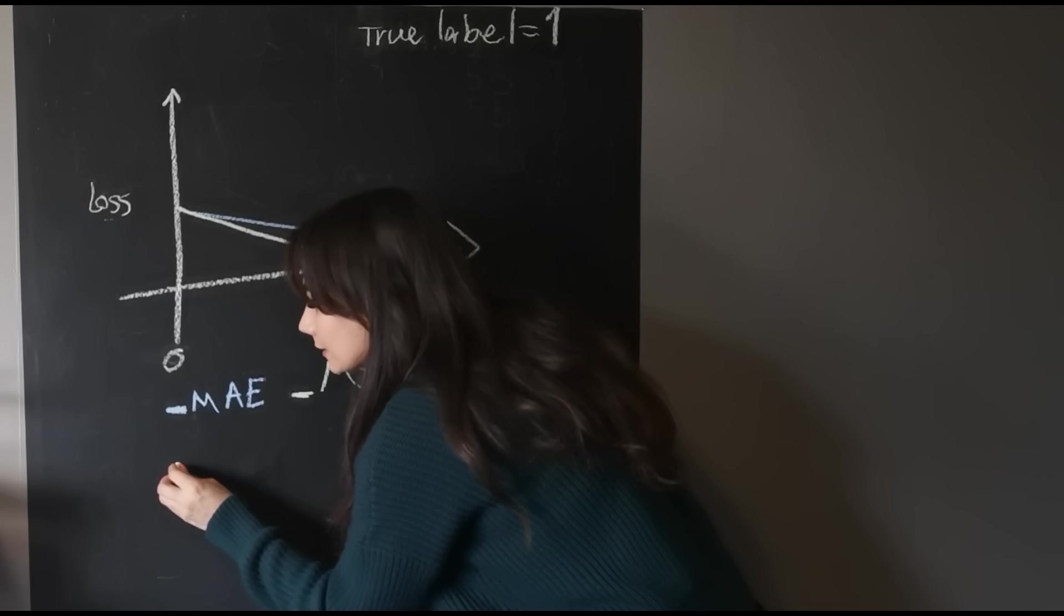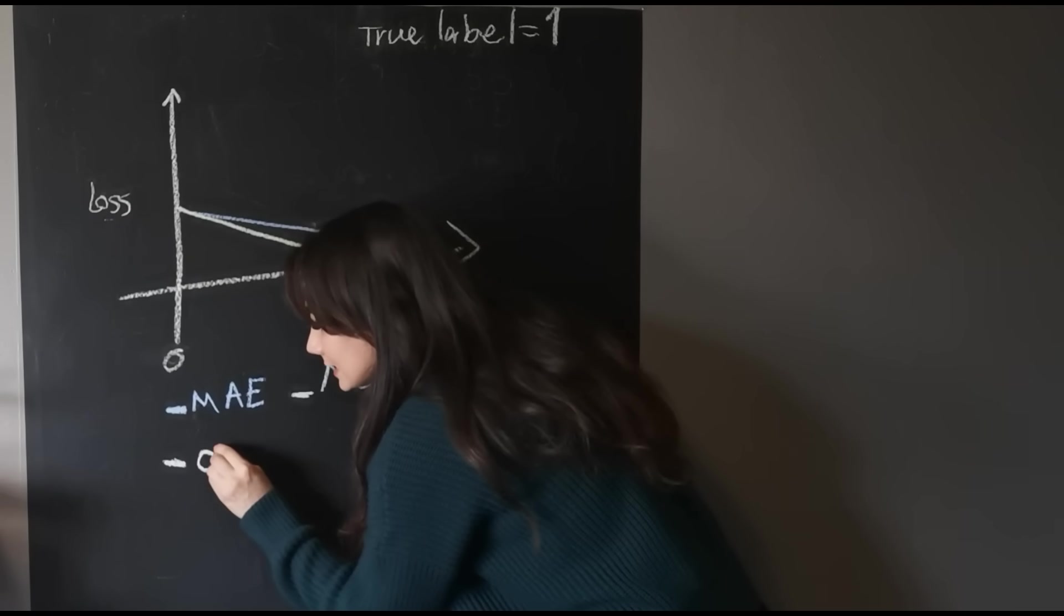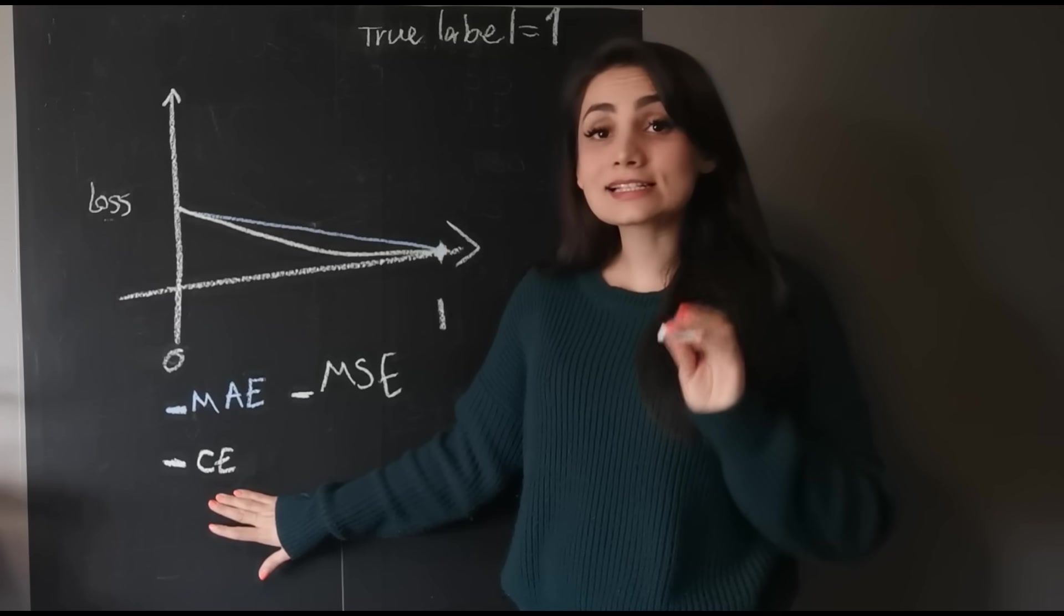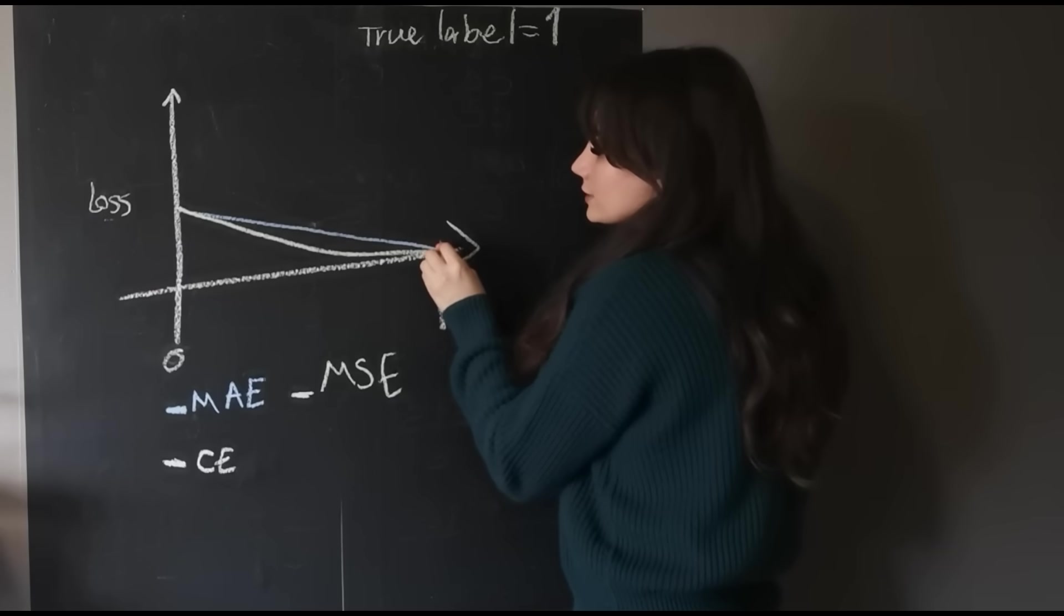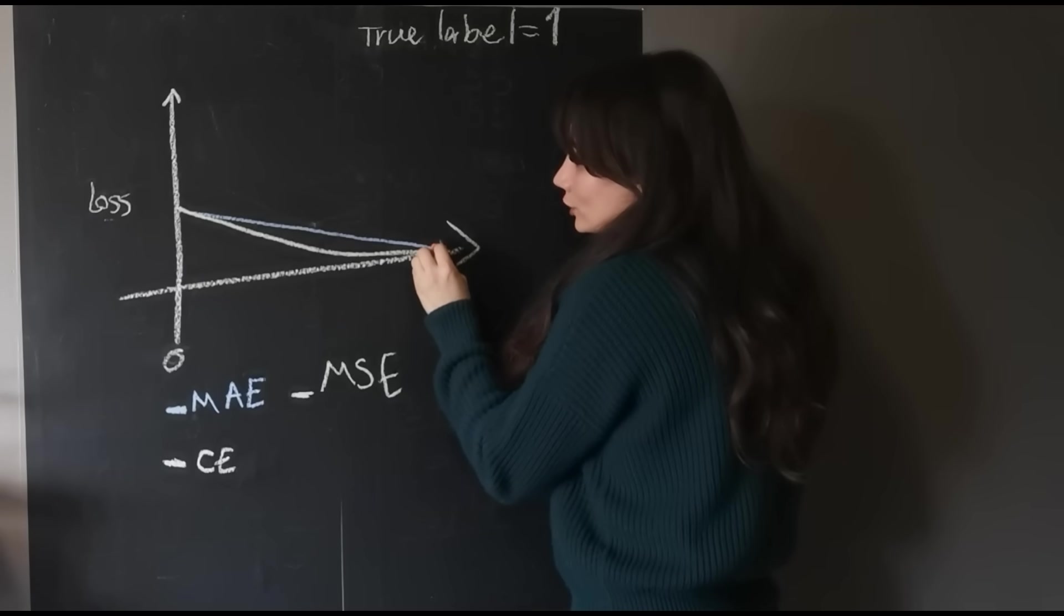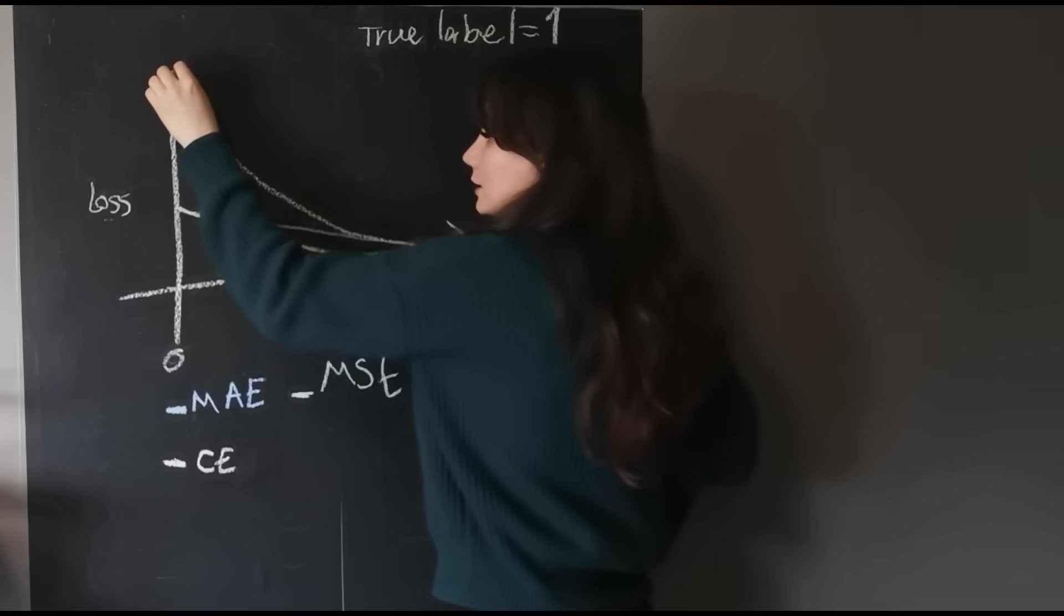And then I'm going to put cross-entropy here. I'm just going to put CE. Since I'm using log, this value, when you're going close to zero, is going to go extremely fast. And then you just suddenly skyrocket.